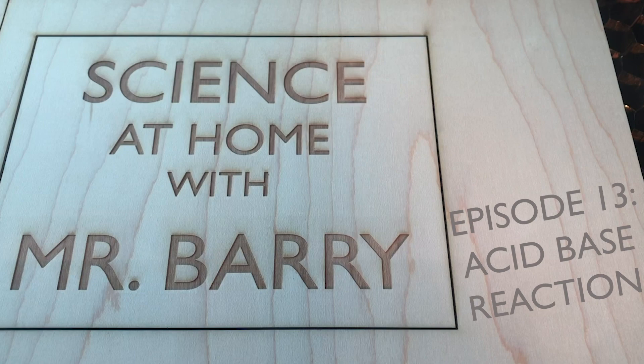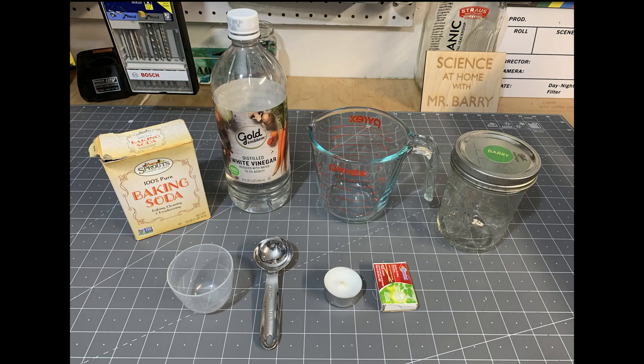Episode 14, Acid-Base Reaction. For this experiment, you're going to need some baking soda and vinegar, something to mix them in, a small cup to hold the baking soda, a measuring spoon, a candle, some matches, and I also went ahead and got a jar to hold the products of the reaction to save for another experiment.